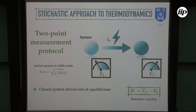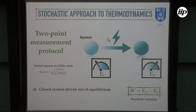So let's start with our system initially prepared in a Gibbs state, and imagine to do a projective measurement on the energy of the system. Let's imagine we record an outcome E_i at time t equal to zero. Then we drive the system out of equilibrium according to some work protocol lambda until a certain time tau, at which point we again perform the same measurement of energy, this time obtaining another outcome for the energy which we call E_f. Work is defined as the difference between these two energy outcomes.